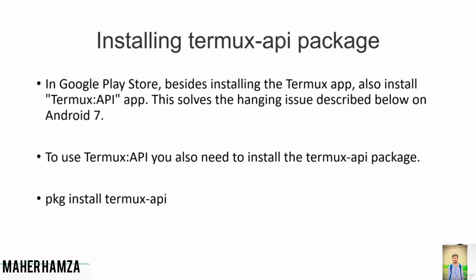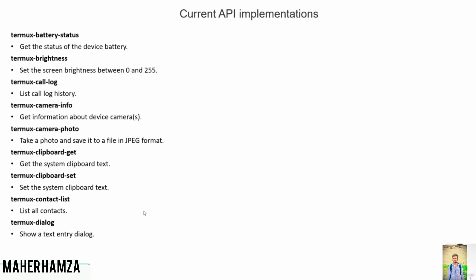After installing Termux API from the Play Store and running the install command inside Termux, you have access to a set of commands. For example, `termux-battery-status` gets the battery status of the device, and `termux-brightness` adjusts your screen brightness. Basically, whatever things you can do from your Android UI, you can do from Termux.